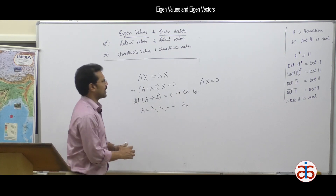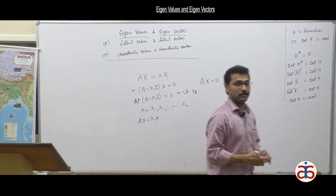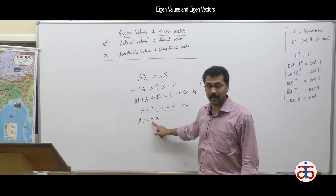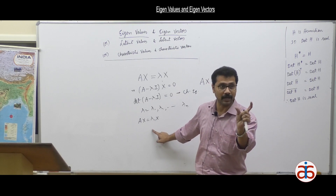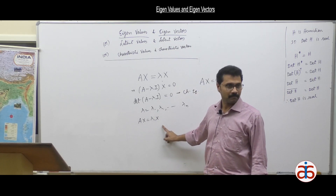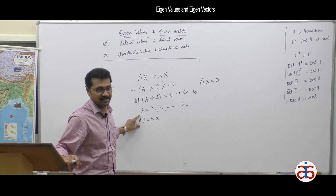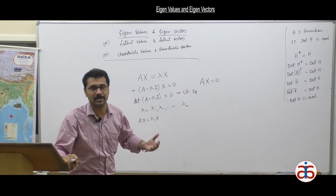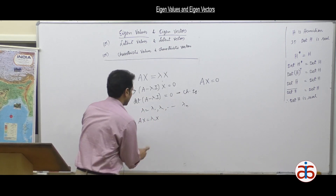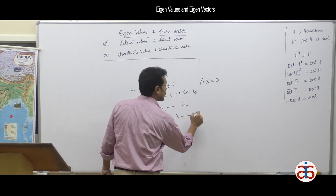For each eigenvalue lambda 1, substituting into Ax equals lambda 1 x gives a homogeneous system. With a specific value of lambda 1 chosen from the n roots, we may get non-trivial solutions. All those non-trivial solutions form a solution space. So for lambda 1, I get a solution space X1.